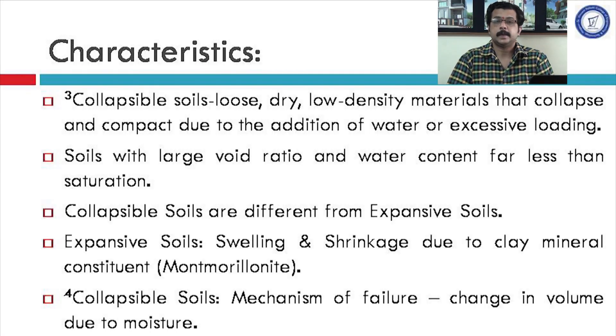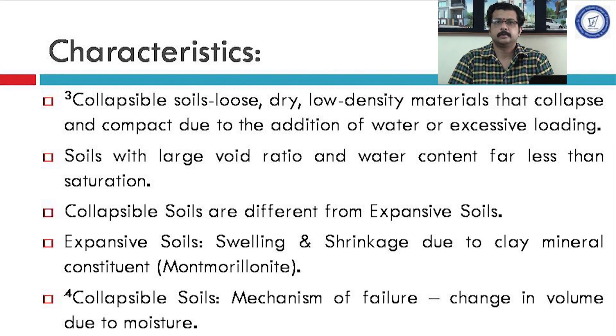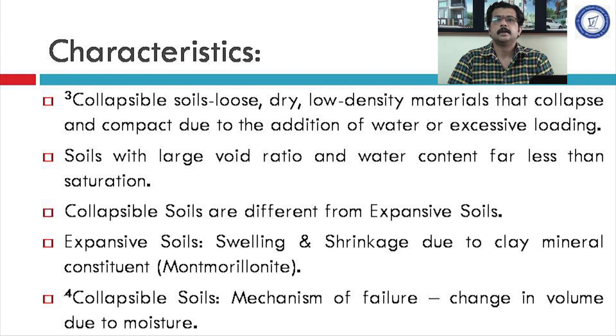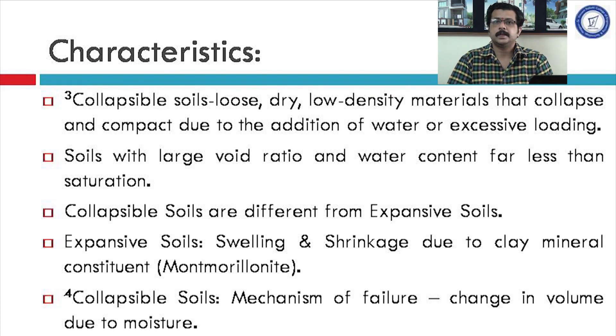A similar change in volume also occurs in expansive soil. The difference between expansive soil and collapsible soil is that expansive soils — such as black cotton soil — show swelling and shrinkage due to the presence of the clay mineral Montmorillonite. In the case of collapsible soil, it is not because of Montmorillonite; rather, it is because of rearrangement or repacking of soil grains caused by moisture or excessive load.